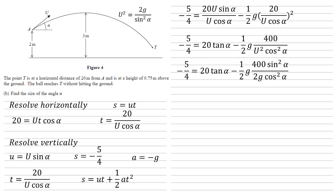We've got sine squared over cos squared there. That gives us tan squared. We've got a G multiplying the fraction and we've got a G on the bottom. They'll cancel out. So simplifying that as well as multiplying our half by our 400 over 2 gives us minus 5 over 4 equals 20 tan alpha minus 100 tan squared alpha.